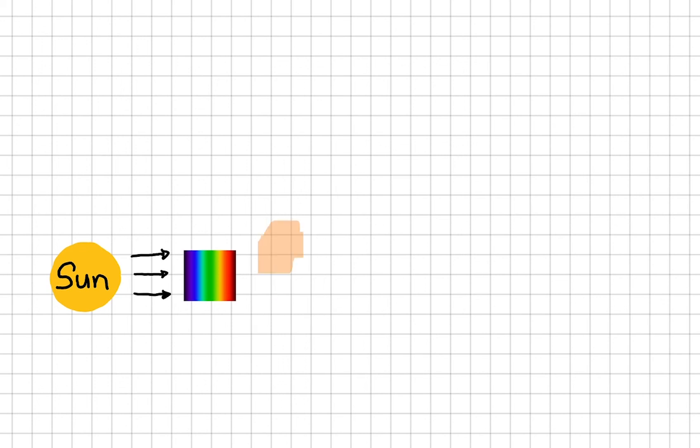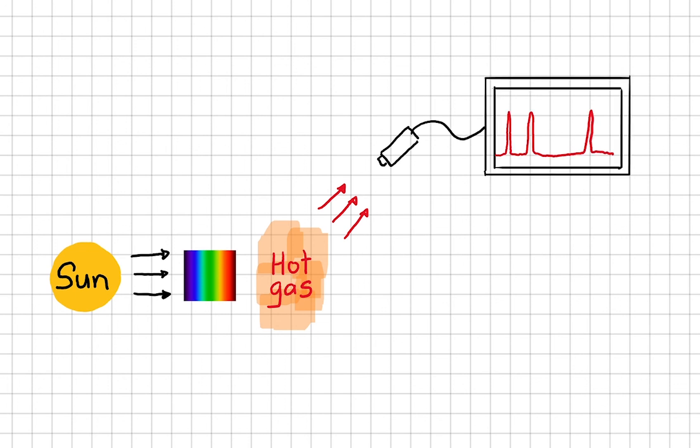The gas then becomes excited, which means that it becomes hotter so that it can re-emit photons, giving us the emission spectrum if we can isolate just the gas and look at it through a spectroscope.